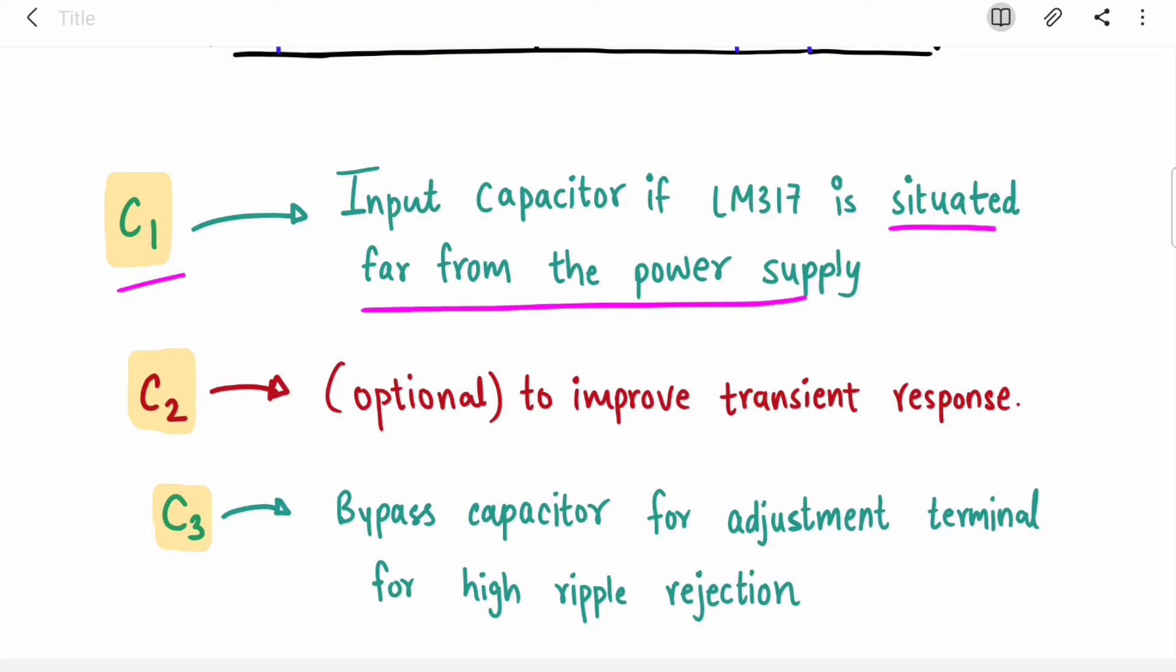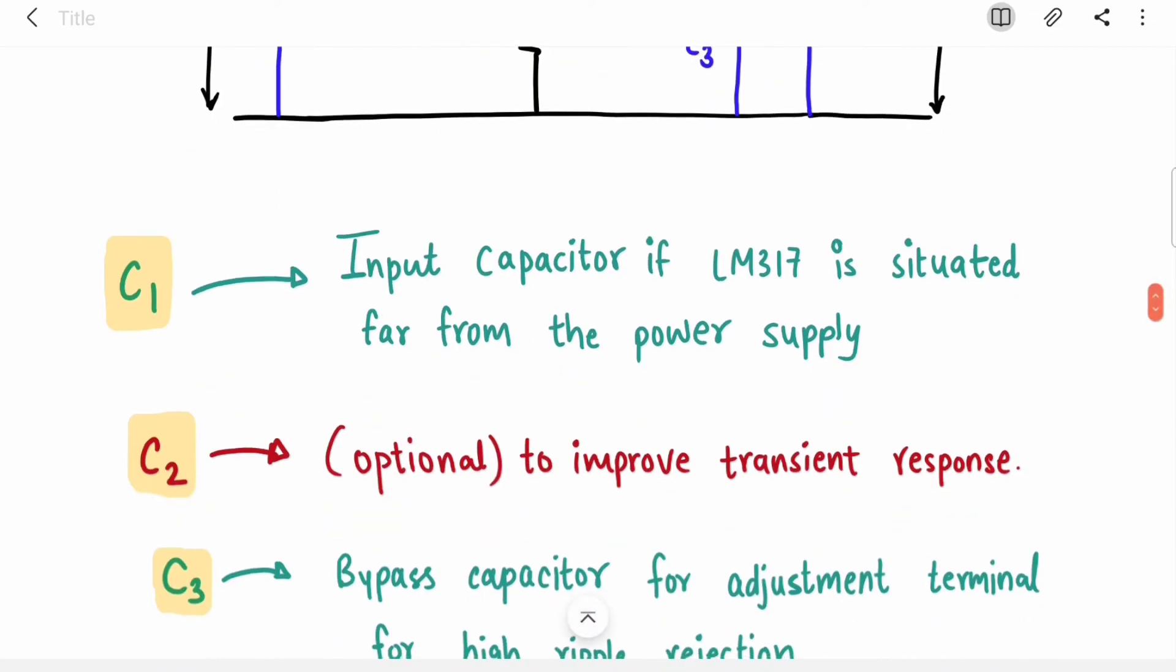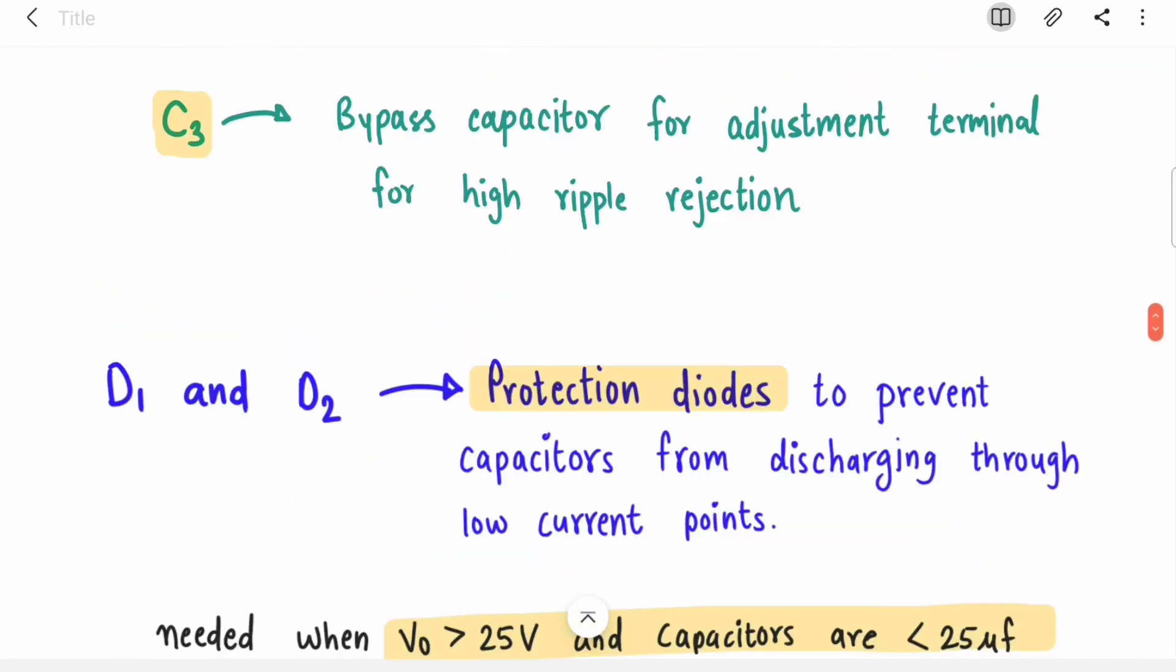C1, the input capacitor, is used to avoid fluctuations or voltage spikes if your IC is far from power supply. C2 is used to improve transient response. C3 across the R2 potentiometer is a bypass capacitor for the adjustment terminal for high ripple rejection. Overall, these three capacitors give you high ripple rejection, avoiding fluctuations and voltage spikes.